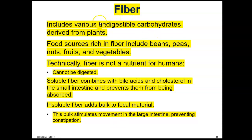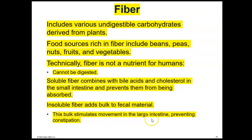Fiber includes various undigestible carbohydrates derived from plants. Food sources rich in fiber include beans, peas, nuts, fruits, and vegetables. Technically, fiber is not a nutrient for humans because we can't digest it, but we still need it to help with digestion. There are two types of fiber: soluble fiber combines with bile acids and cholesterol in the small intestine and prevents them from being absorbed. Insoluble fiber adds bulk to fecal material and stimulates movement in the large intestine, preventing constipation.